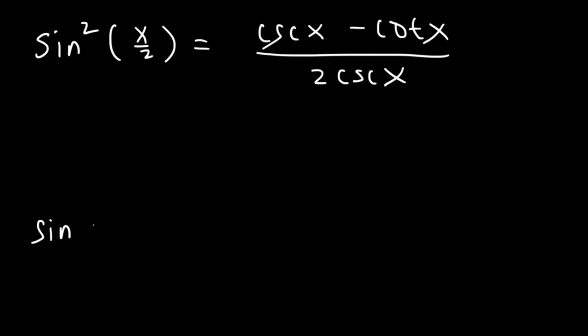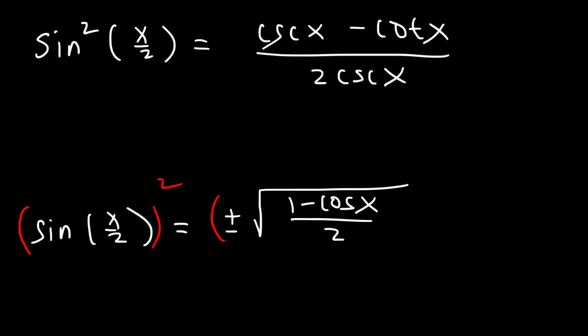Now recall that the half angle identity for sine is plus or minus square root 1 minus cosine divided by 2. But here we have sine squared which means we need to square both sides. So therefore sine squared is going to be equal to 1 minus cosine x divided by 2. So we can replace sine squared with this expression.